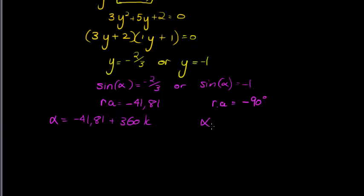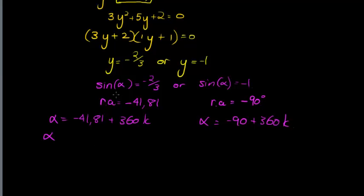Or alpha is equal to negative 90 plus 360 times k. Or for sine, our second solution is where alpha is equal to 180 degrees minus the reference angle, which in this case is negative. So it's plus 41.81 plus 360 times k. That solution is 221.81 plus 360 times k.